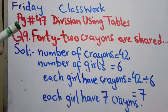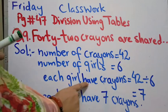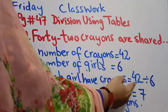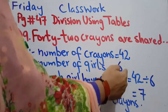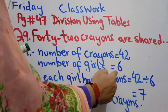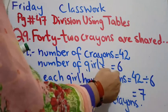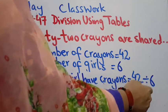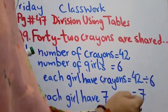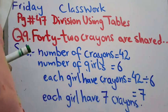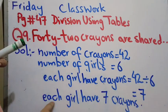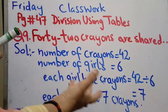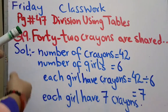Each girl has crayons - we have to find this. For it we will divide number of crayons with number of girls. Girls are 6 in a group, so we divide 42 by 6. Where does 42 come in 6 table? It comes at 7. So each girl has 7 crayons. This question is easy.